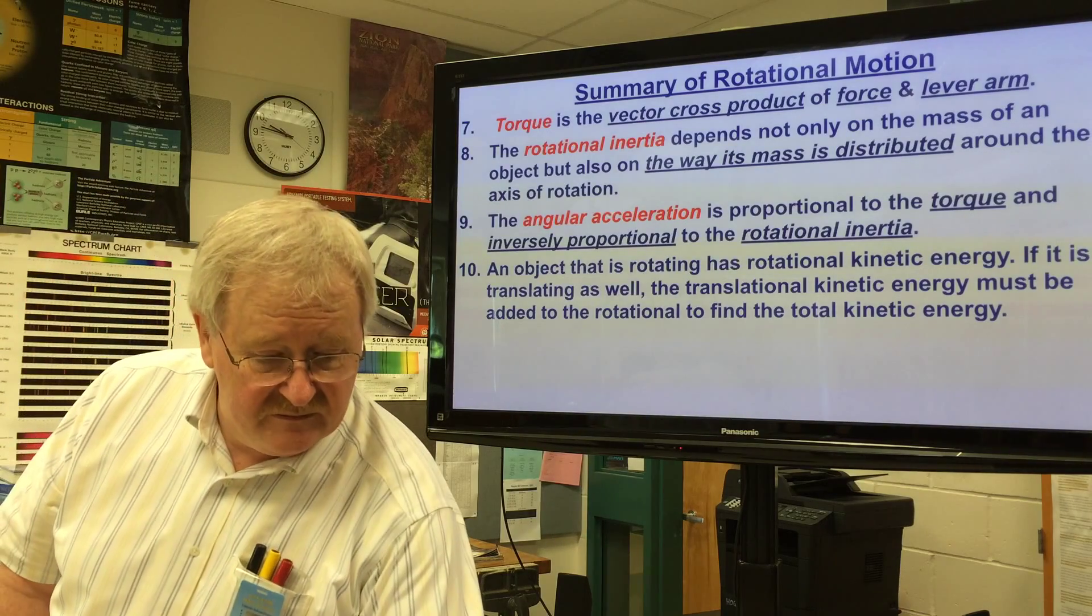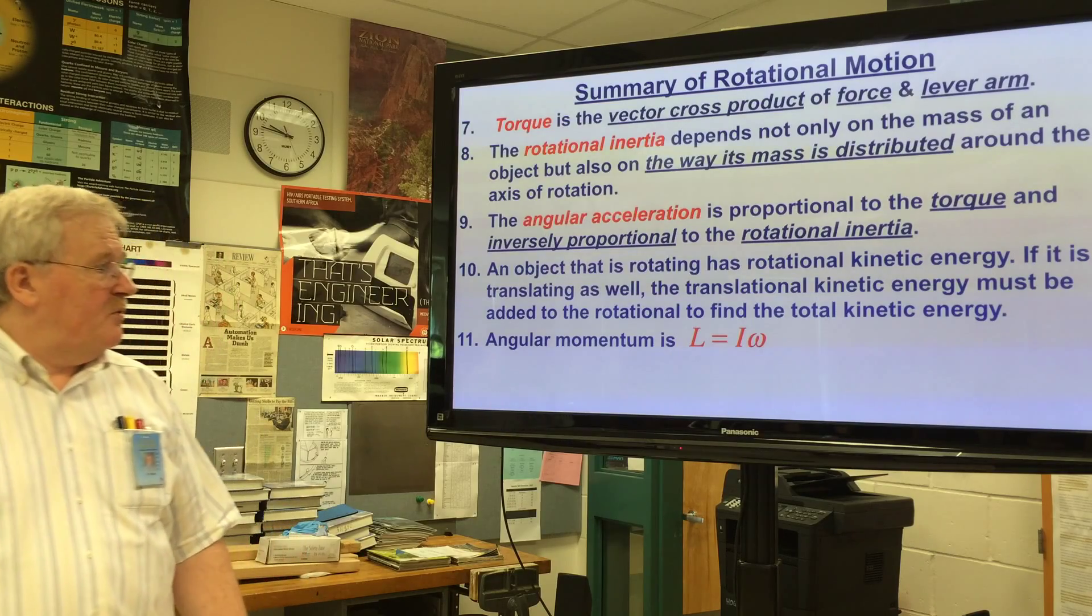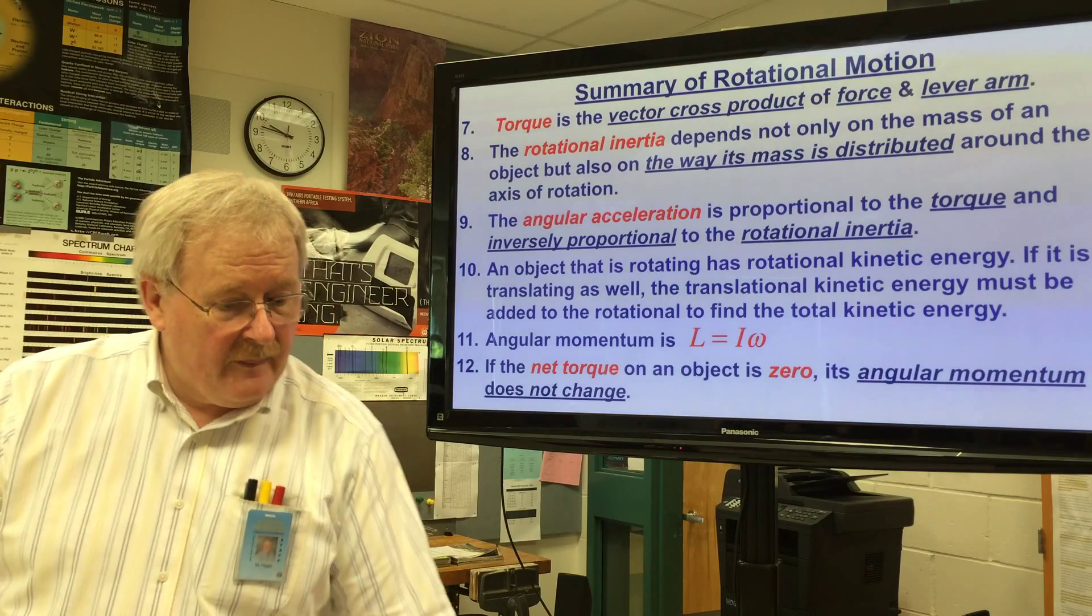An object that is rotating has rotational kinetic energy. If it's translating as well, the translational kinetic energy must be added to the rotational to find the total kinetic energy.